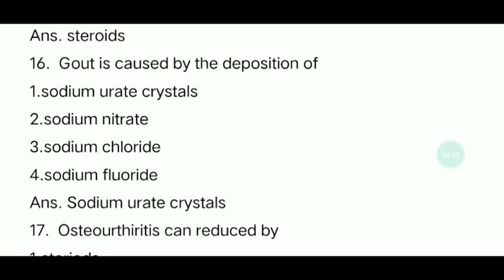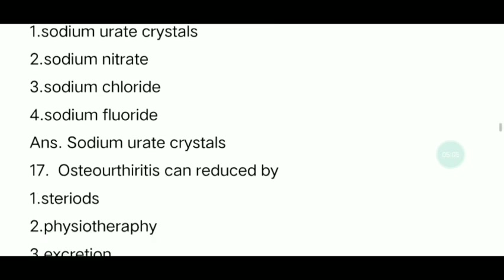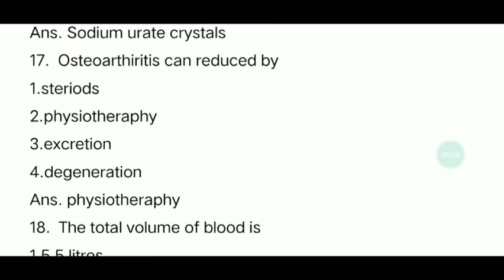Sixteenth question: Gout is caused by the deposition of what? Gout is one type of arthritis. The answer is sodium urate crystals. Seventeenth question: Osteoarthritis can be reduced by what? The answer is physiotherapy.